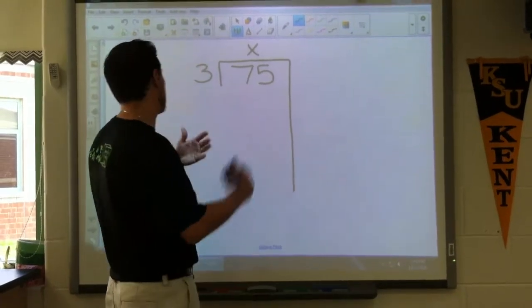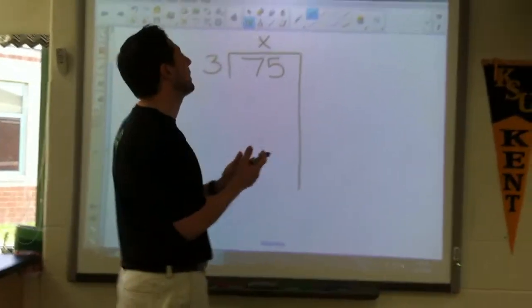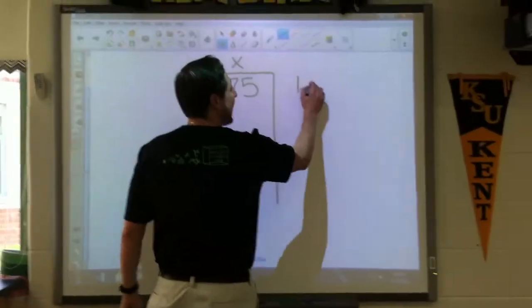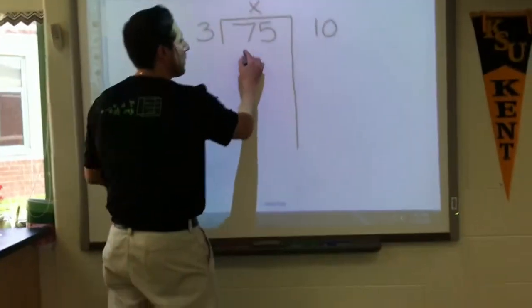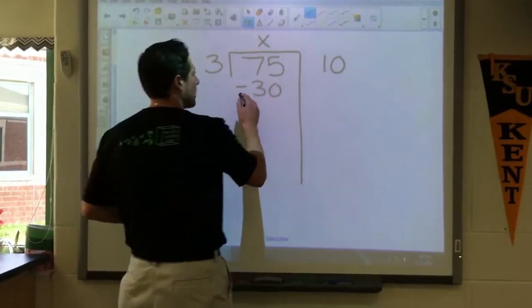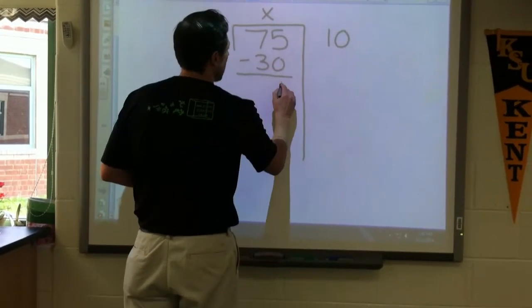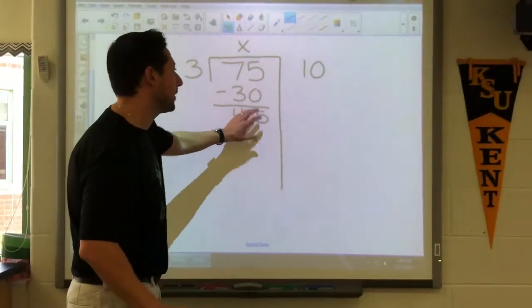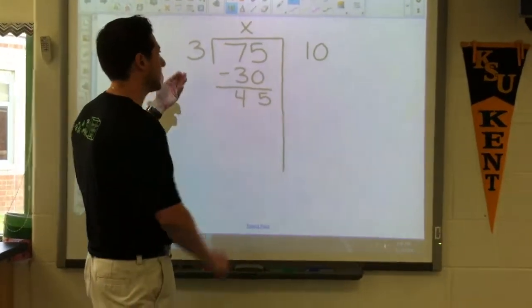We've got 75 divided by 3 and I'm going to ask myself, what do I know about 3? Well I know that 3 times 10 is 30, so I'll write my 10 here and I'll subtract my 30. So we're subtracting like we used to do when we would do the traditional method. 5 minus nothing is 5, 7 minus 3 is 4. So now I'm no longer looking at 75, I'm looking at 45.